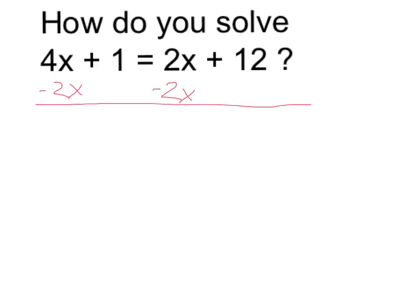4x minus 2x, take the 4x's, take away two of them, that's going to leave me with 2x, and all over I get 2x plus 1. 2x minus 2x, that cancels and leaves me with 12.